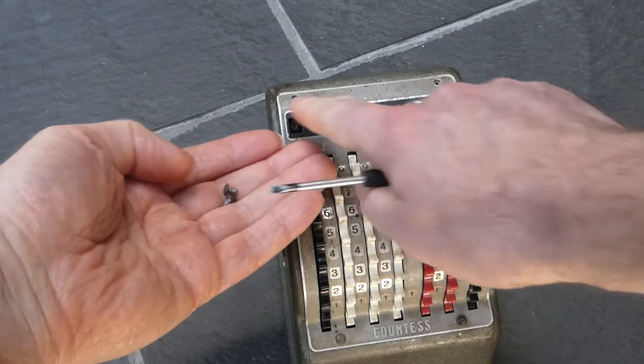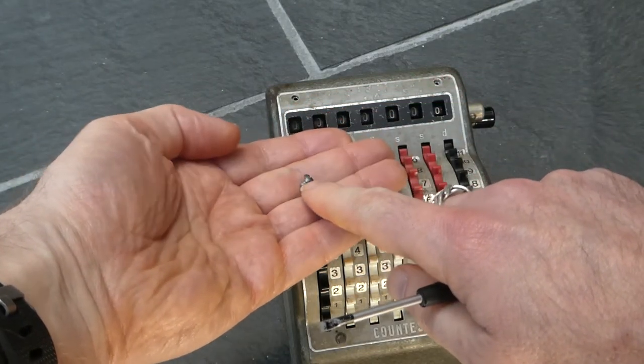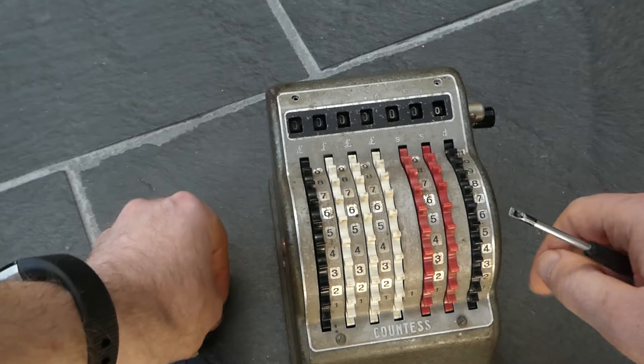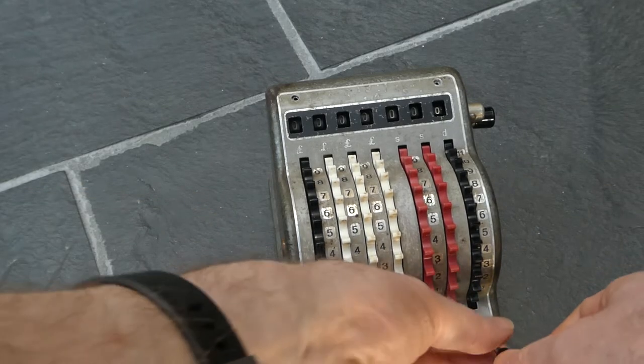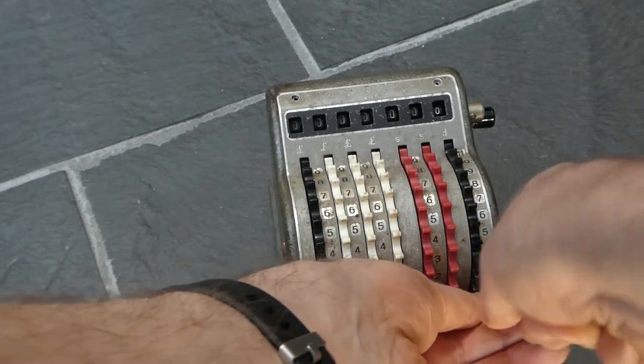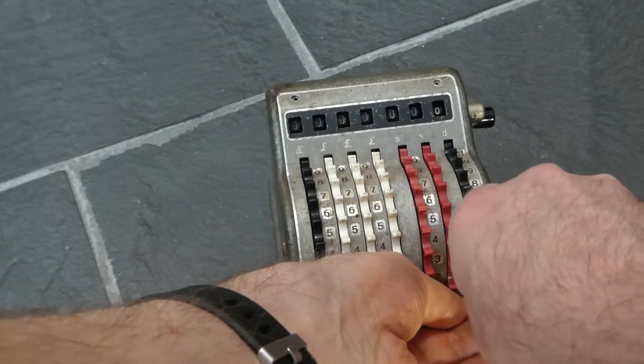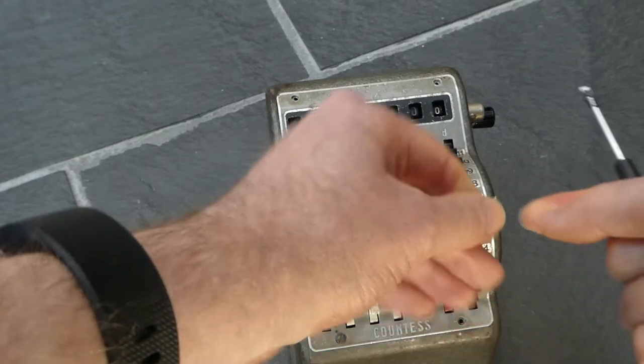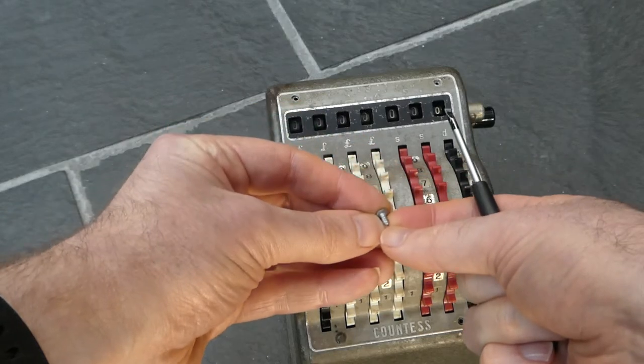By the way, these top two screws have been shortened slightly because if they were the same length as these two, they'd interfere with the number wheels. These are ever so slightly longer.